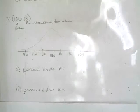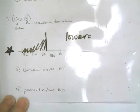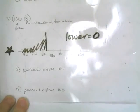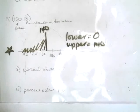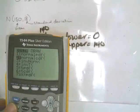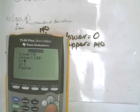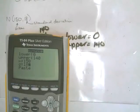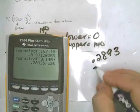The next one is the percent below 140. My lower bound needs to be something way down — picking 0 or even negative 1,000 will work. You just don't want to pick 90, because there could be data points past that. My upper bound is 140. Going back to second distribution, Normal CDF, lower bound 0, upper bound 140, mean 150, standard deviation 18 — I get 0.2893, so 28.9% of the data is below 140.